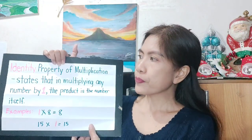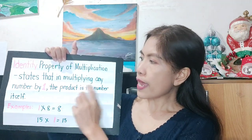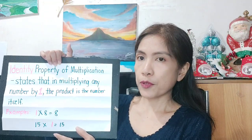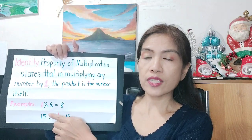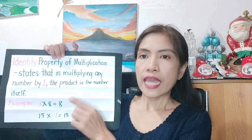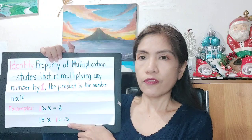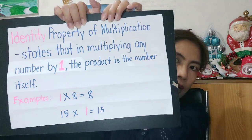The first one is the identity property of multiplication. It states that in multiplying any number by one, the product is the number itself. For example, if you multiply 1 by 8, it gives us the product of 8. And if we multiply 15 by 1, the product is 15. This is the identity property of multiplication.